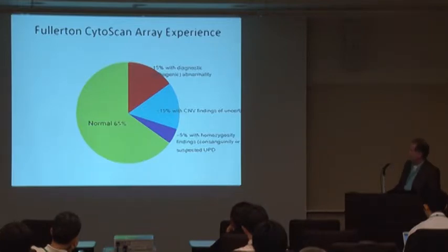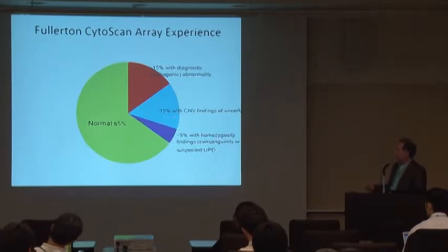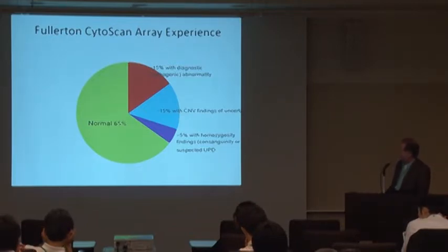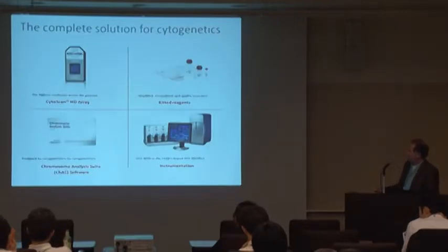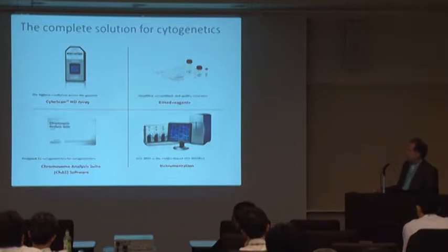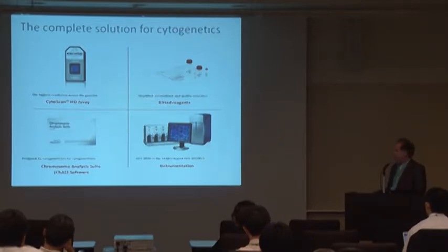It certainly has almost doubled our yield. We're up to about 35 percent detection rate. You can see here it's 15 percent pathogenic, 15 percent with CNV findings, and five percent with homozygosity findings. Prior to CytoScan, our incorporation of CytoScan into our lab, we were probably at 18 or 20 percent for just our standard karyotyping and FISH. So very nice addition to our lab. As Laura pointed out earlier, it is a complete solution for cytogenetics. From a small lab perspective, it really helps when all the parts to the puzzle come from the same vendor. The array, the reagents, the software, and all the instrumentation come from one supplier and it makes it so much easier and cost-effective for a small facility to use.